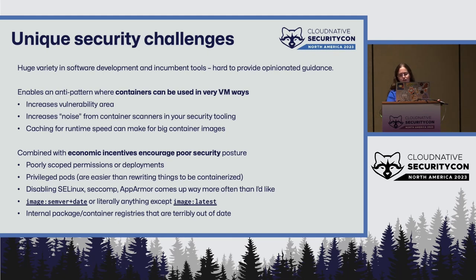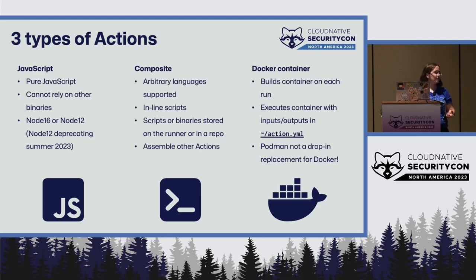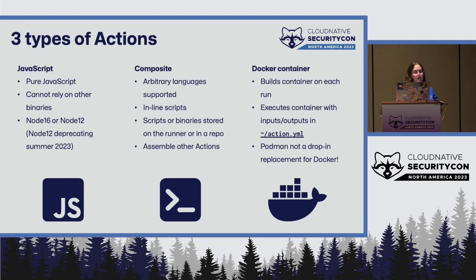To understand why these challenges are unique to Actions in Kubernetes, let's take a detour into what GitHub Actions really are. There are about 17,000 actions in the marketplace, and when you just use GitHub's hosted runners, you don't have to think too deeply about what's going on in an action if you don't want to. Under the cover, a GitHub action can be one of three things: JavaScript — purely JavaScript, Node 16 (don't use Node 12, it's going away) — which can't rely on other binaries.